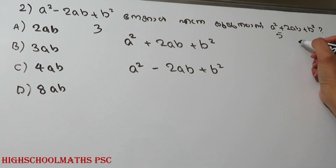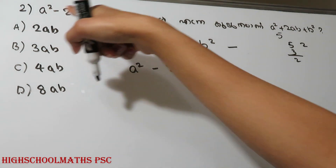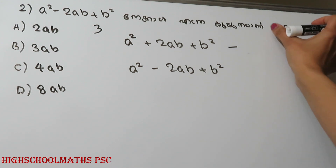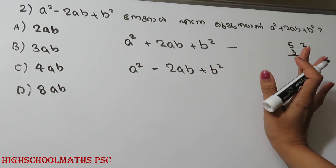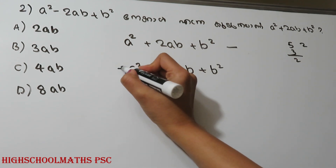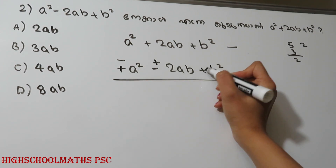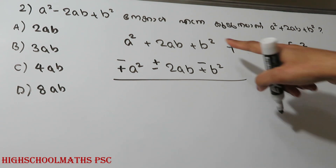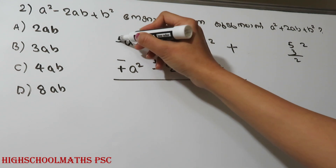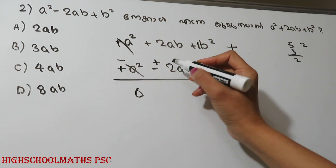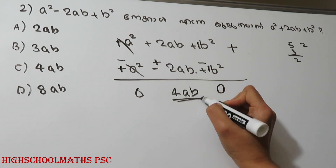If you subtract the two expressions, you construct (a² + 2ab + b²) minus (a² − 2ab + b²). When you apply the minus sign, the symbols change. Plus a² and minus a² cancel to 0. The b² terms also cancel. We get 2ab plus 2ab, and 2 plus 2 gives us 4ab. The answer is option C.